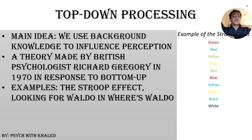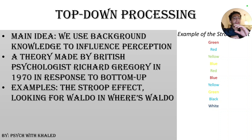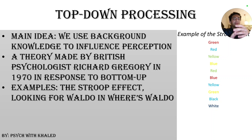When it comes to Where's Waldo, this is also top-down processing because we have a previous memory of how Waldo looks — we were told how Waldo looks. We're goal-driven to find Waldo, so we'll look through many pictures, characters, and objects knowing what we're searching for. The reason this wouldn't be bottom-up processing is because with bottom-up processing, we'd just be seeing lots of characters, objects, and things in the picture, without a goal or purpose. Therefore, top-down processing is applicable to Where's Waldo.